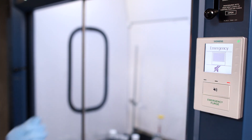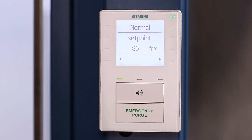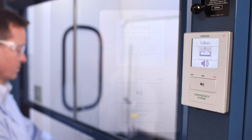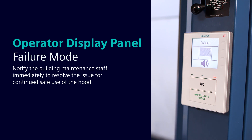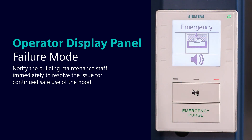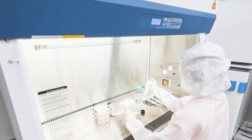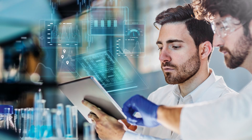The alarm can be muted. When the condition is cleared, the user pushes the button again to go back to normal mode. Remember, failure mode indicates a component in the system has failed — notify the building maintenance staff immediately to resolve the issue for continued safe use of the hood. The Siemens Operator Display Panel is a user-friendly monitoring solution for required fume hood safety standards that keeps the user safe and aware of fume hood status at all times.